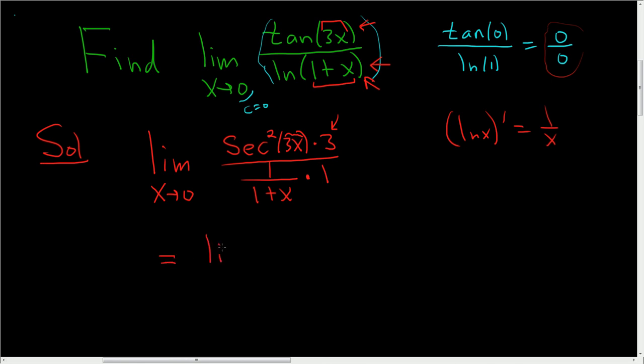This is equal to the limit as x approaches 0. Let's rewrite this. 3 secant is 1 over cosine, so this is 1 over cosine squared 3x. That's what we have in the numerator. And in the denominator, we have 1 over 1 plus x.